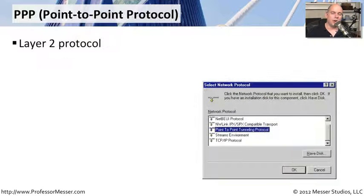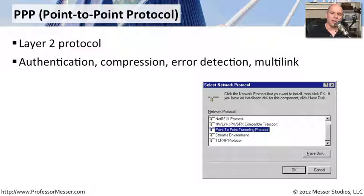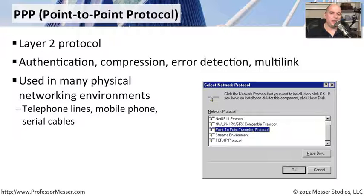Another legacy protocol that we commonly see with remote access is Point-to-Point Protocol, or PPP. PPP is a Layer 2 protocol, and one of the reasons we still see it used so much is that we can use it on many different Layer 3 protocols. It provides authentication, it can compress data, it can do error detection, and we can even bring up multiple PPP links and use them all at the same time in a multi-link environment to increase available bandwidth. PPP is very versatile and is used in many popular technologies today.